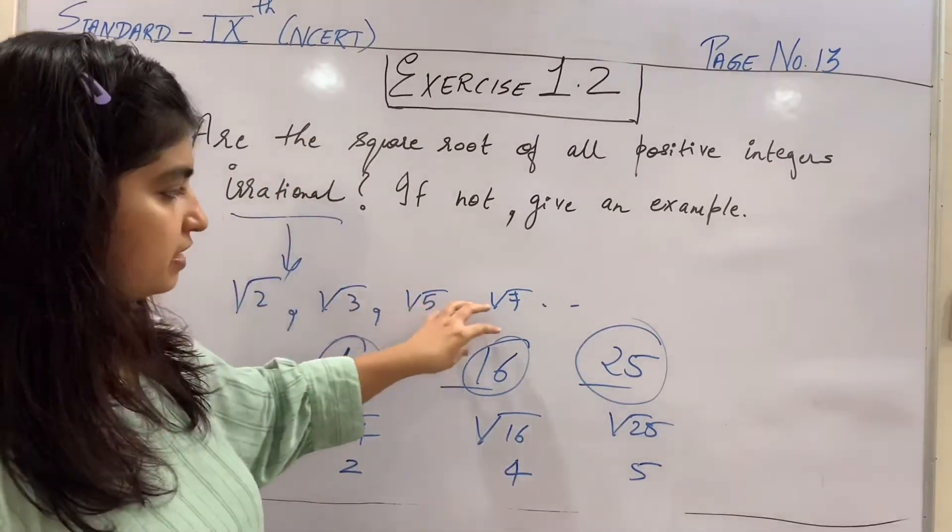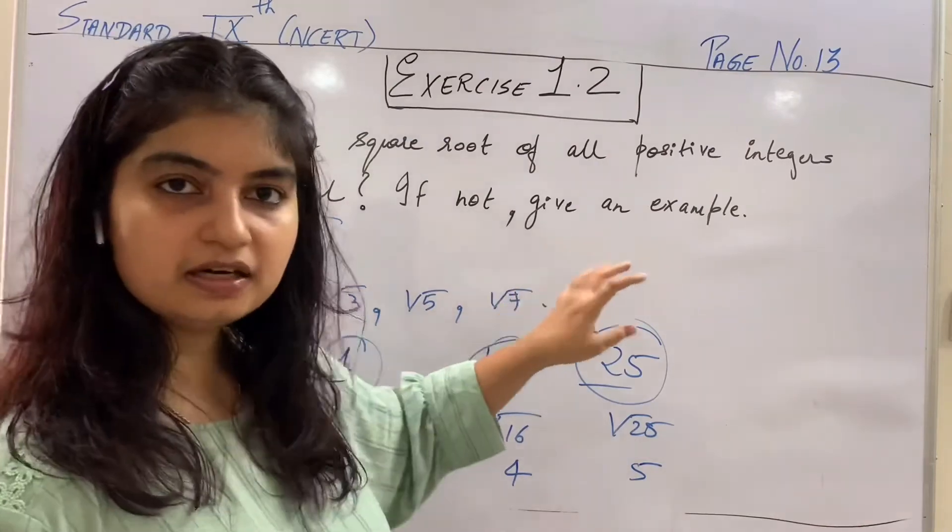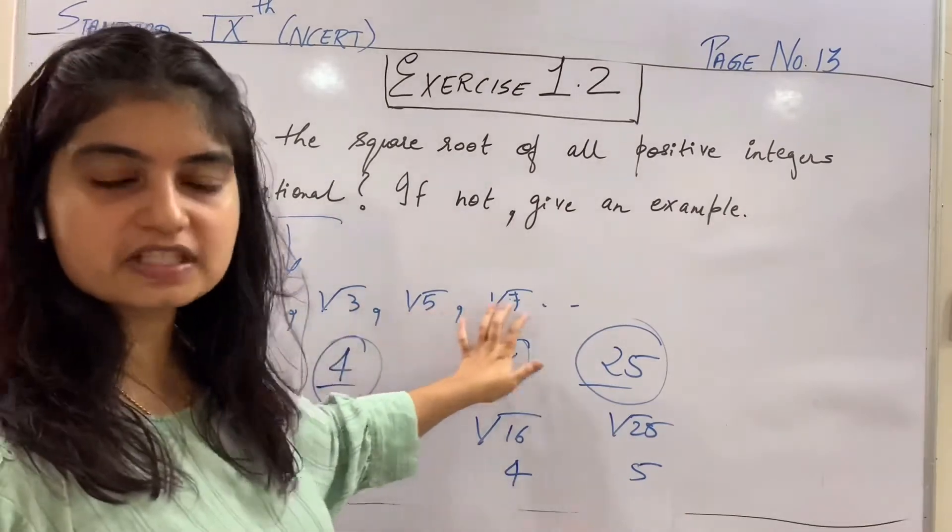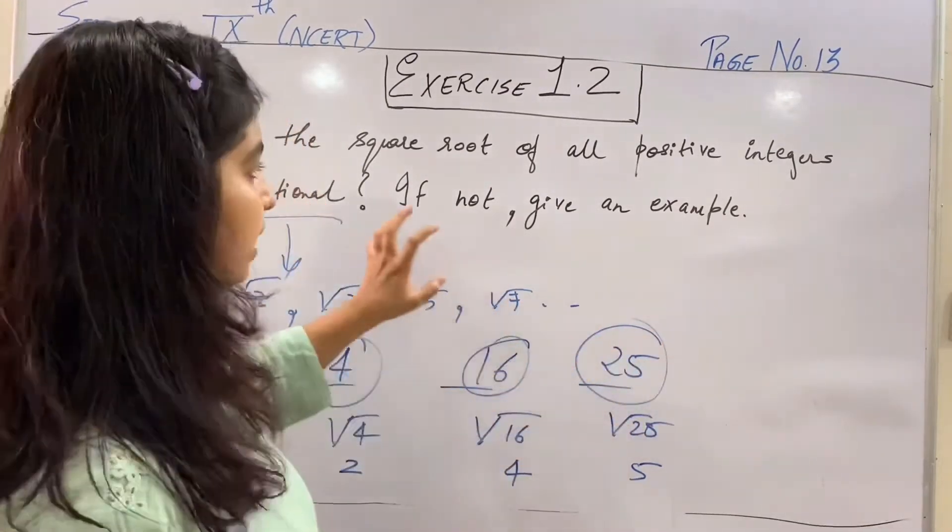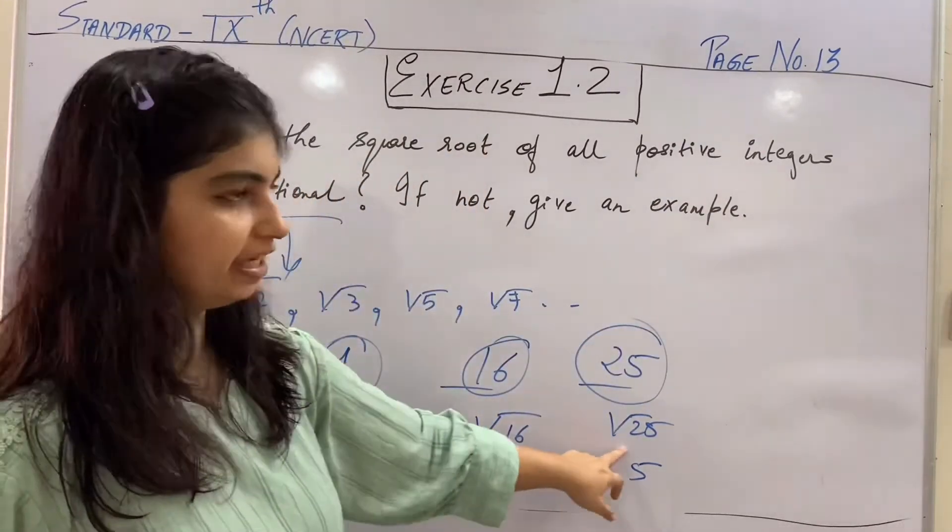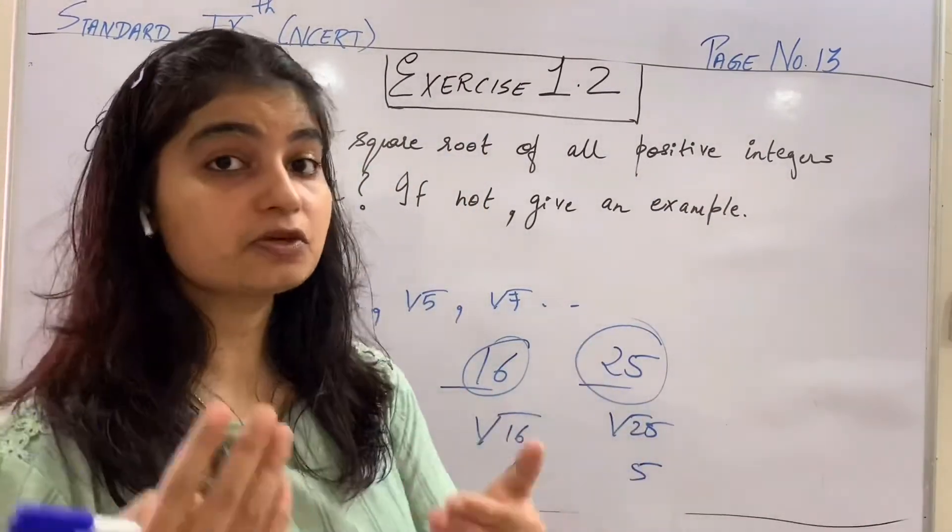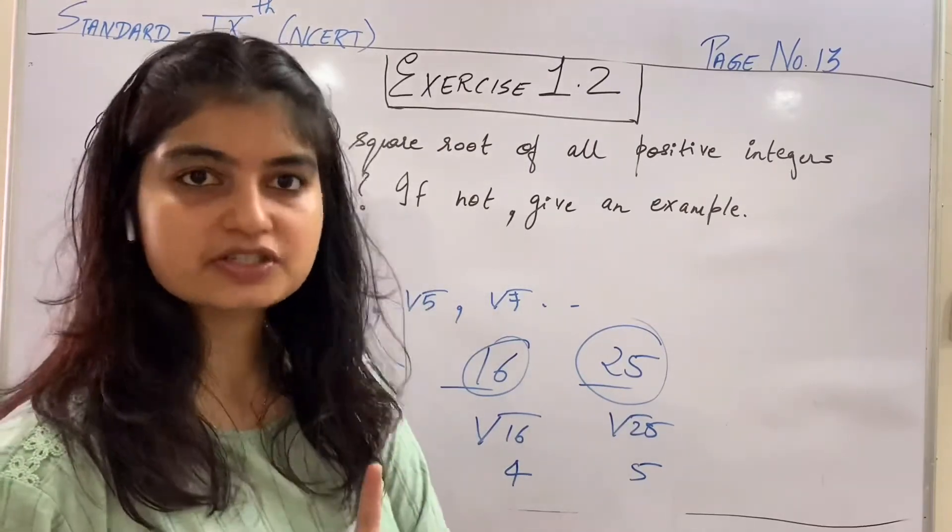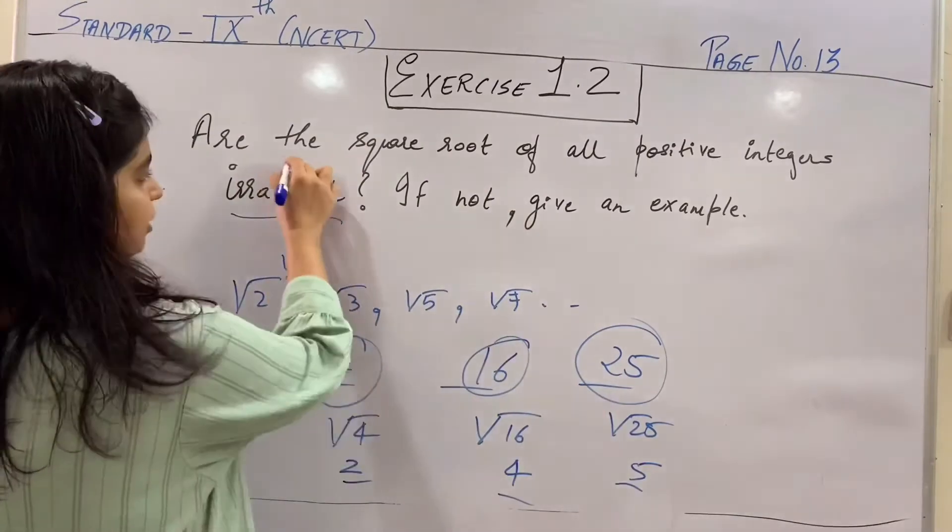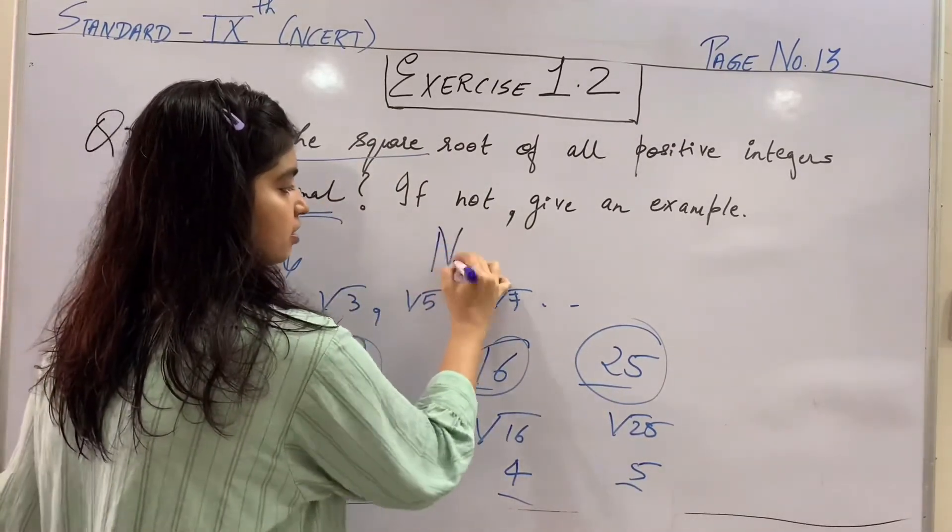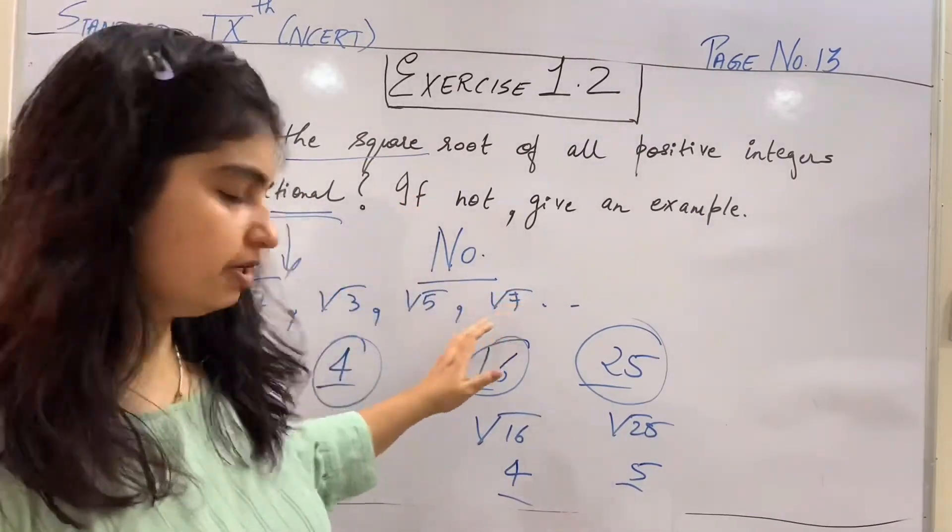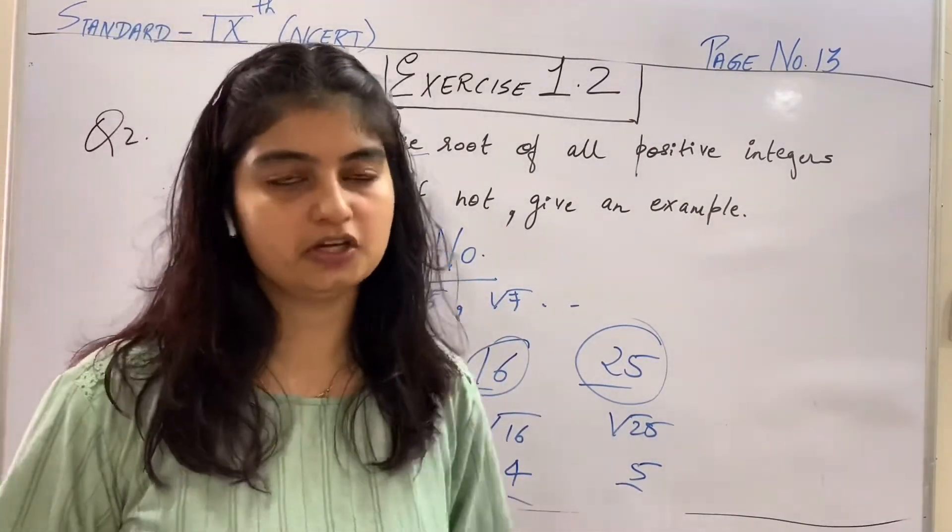So, kuch aise positive integers hain, jinke square roots jo hain, woh irrational hain. These are the examples: 2, 3, 5, 7 and so on. But, aise bahut saare doosre bhi positive integers hain, like 4, 16, 25 and so on, jinke square root irrational nahi hai. They are rational. So, this particular statement, are these irrational? The answer is no. And if examples are demanded in the question, you can state such examples.